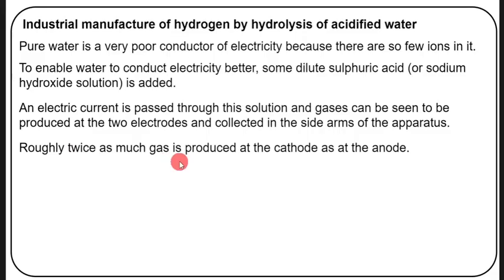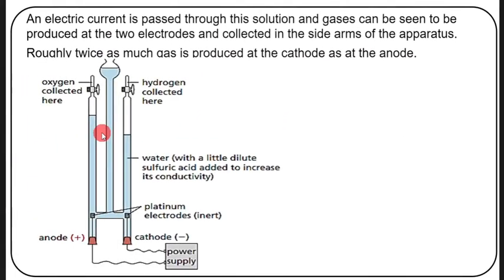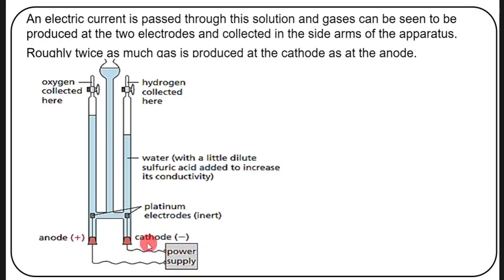Roughly twice as much gas is produced at the cathode as at the anode. The apparatus is filled with water to which sulfuric acid has been added to increase conductivity. The negative terminal of the battery becomes the cathode and the positive terminal becomes the anode. When electricity passes through water, it is split into its components: hydrogen is collected at the cathode (negative terminal) and oxygen at the anode (positive terminal).